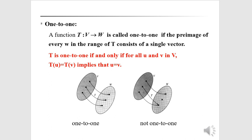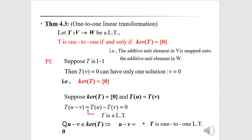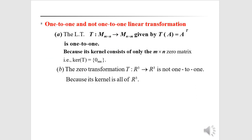Definition of one-to-one: T is one-to-one if and only if for all u and v in V, T(u) = T(v) implies u = v. T is onto W when range(T) = W. Theorem: T: V → W is one-to-one if and only if kernel(T) = {0}. If T is one-to-one, T(v) = 0 implies v = 0, so kernel(T) = {0}. Conversely, if kernel(T) = {0} and T(u) = T(v), then T(u − v) = 0, so u = v.